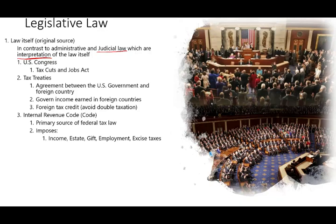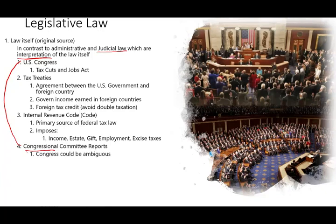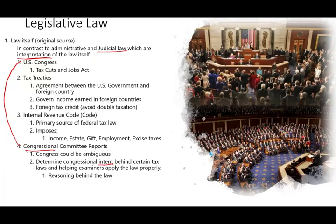We also have the Congressional Committee Report. When the U.S. Congress writes a law and the language is ambiguous or there is conflicting information, Congress will issue a Congressional Committee Report to clarify the law and determine congressional intent. The key word is intent — the intent behind the tax law — so that preparers, CPAs, and lawyers know how to apply the law properly. It gives the reason behind the law and helps explain how to apply it.